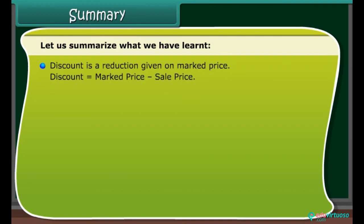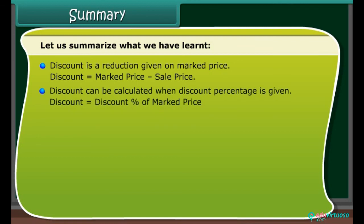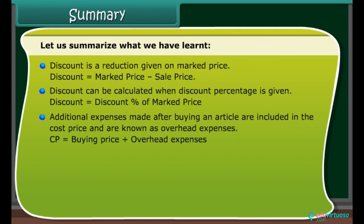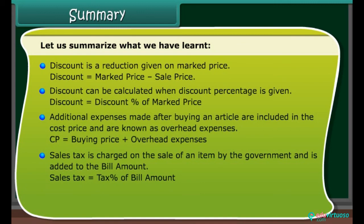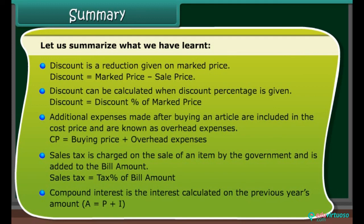Summary: Let us summarize what we have learned. Discount is a reduction given on marked price. Discount is equal to marked price minus sale price. Discount can be calculated when discount percentage is given: discount is equal to discount percentage of marked price. Additional expenses made after buying an article are included in the cost price and are known as overhead expenses. CP is equal to buying price plus overhead expenses. Sales tax is charged on the sale of an item by the government and is added to the bill amount. Sales tax is equal to tax percentage of bill amount. Compound interest is the interest calculated on the previous year's amount, A equals P plus I, compounded annually.